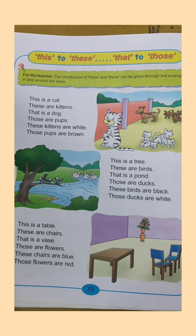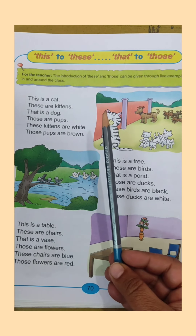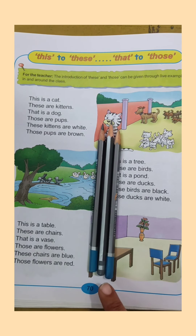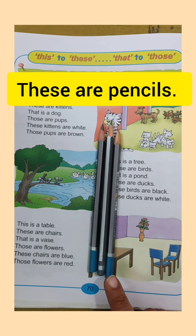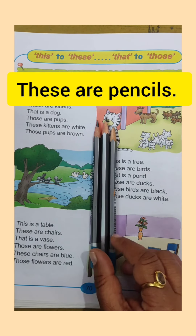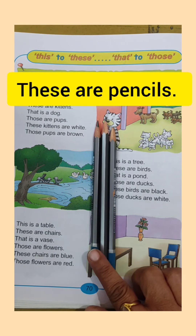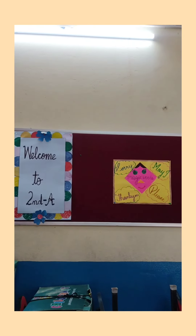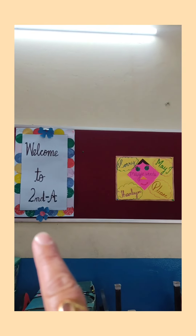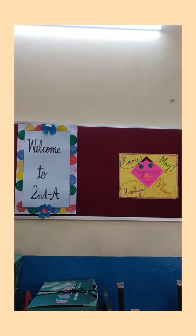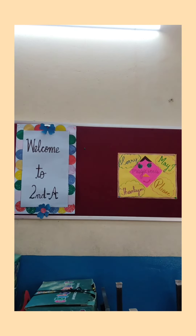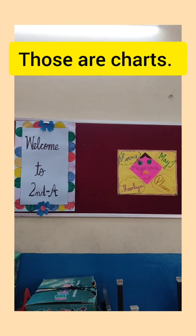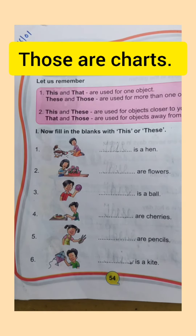Now, 'this is a pencil' — but in my hand I am holding three pencils. There are many, and they are near, so we don't say 'this is a pencil.' We say 'these are pencils' — near and many. And if there are two charts far away, we don't say 'that are charts.' We say 'those are charts.'